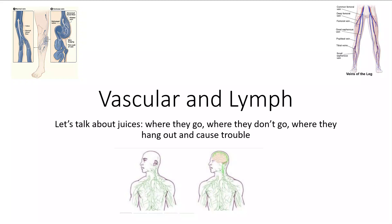Hey team! Welcome to our discussion of conditions of vascular and lymphatic diseases. We are going to talk about fluids — where does the juice go, where does it stay put, where do we not have enough of it? All sorts of different states in which we have fluid issues in the periphery, in other words your arms and legs. So let's jump right in.